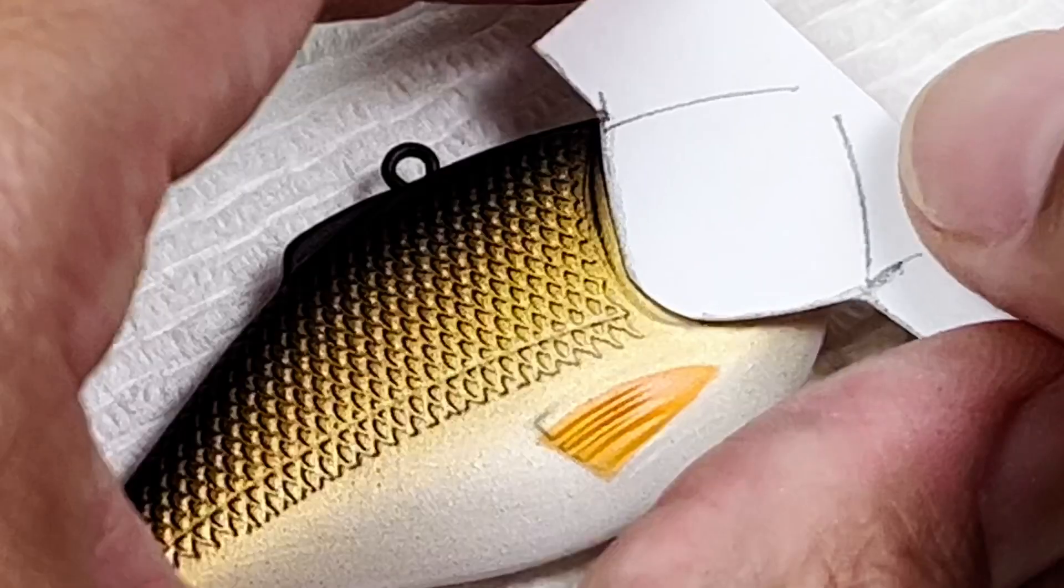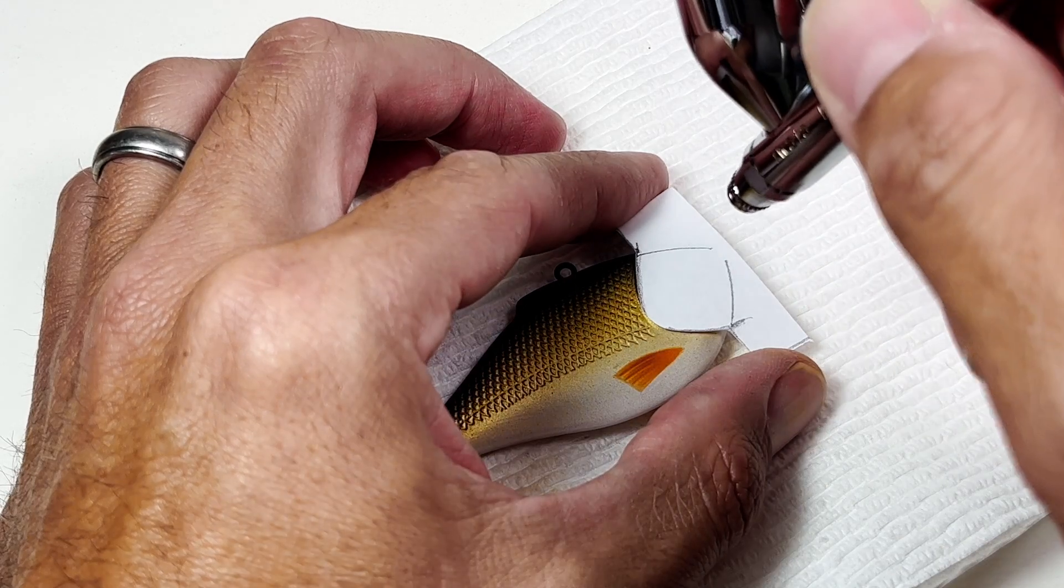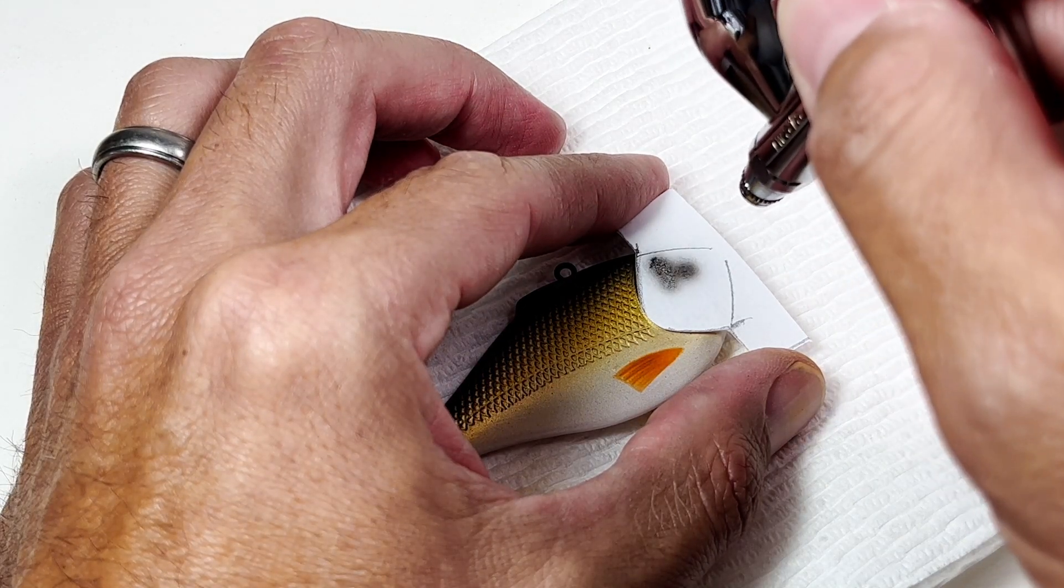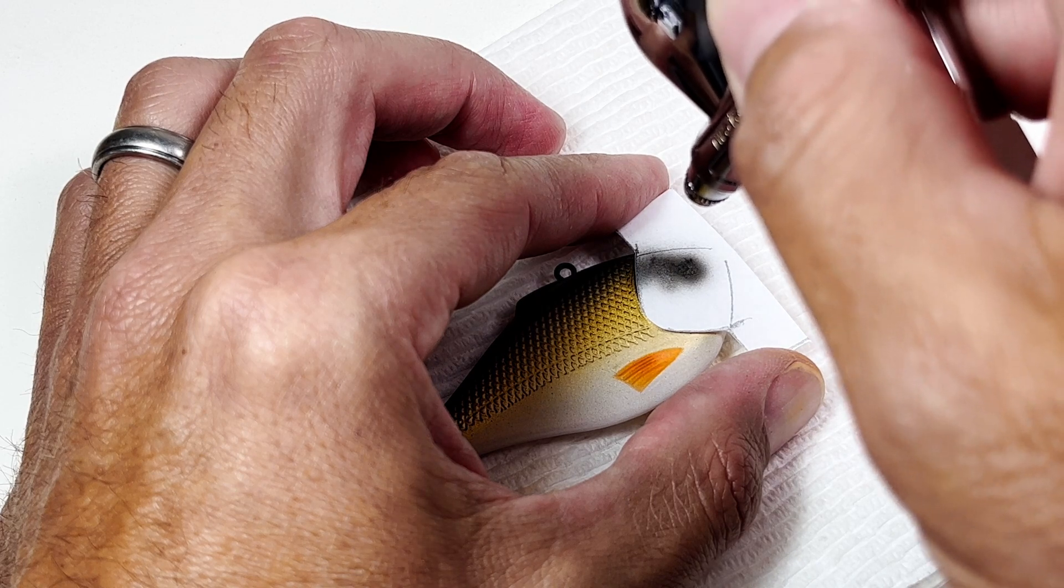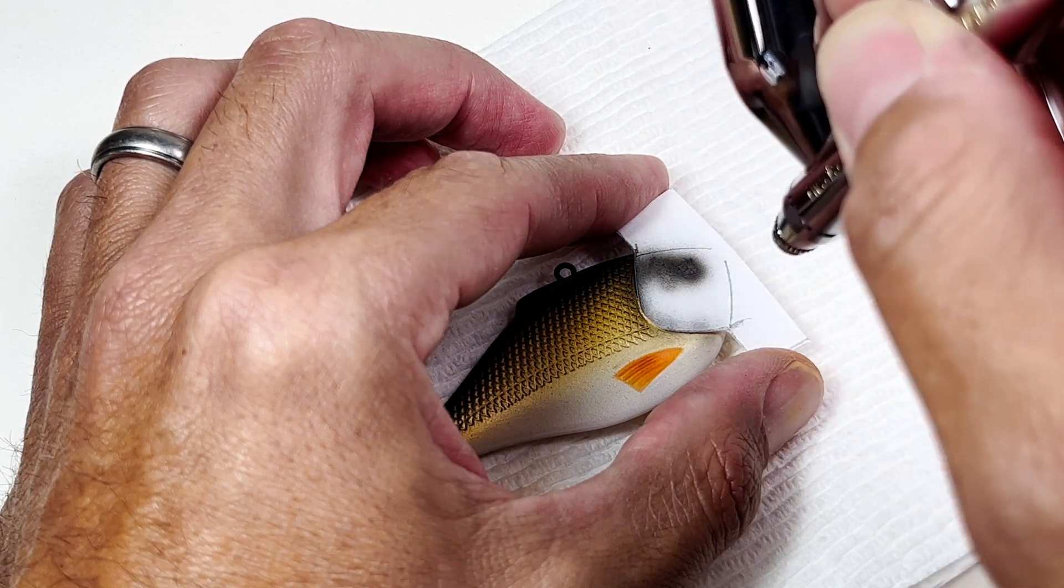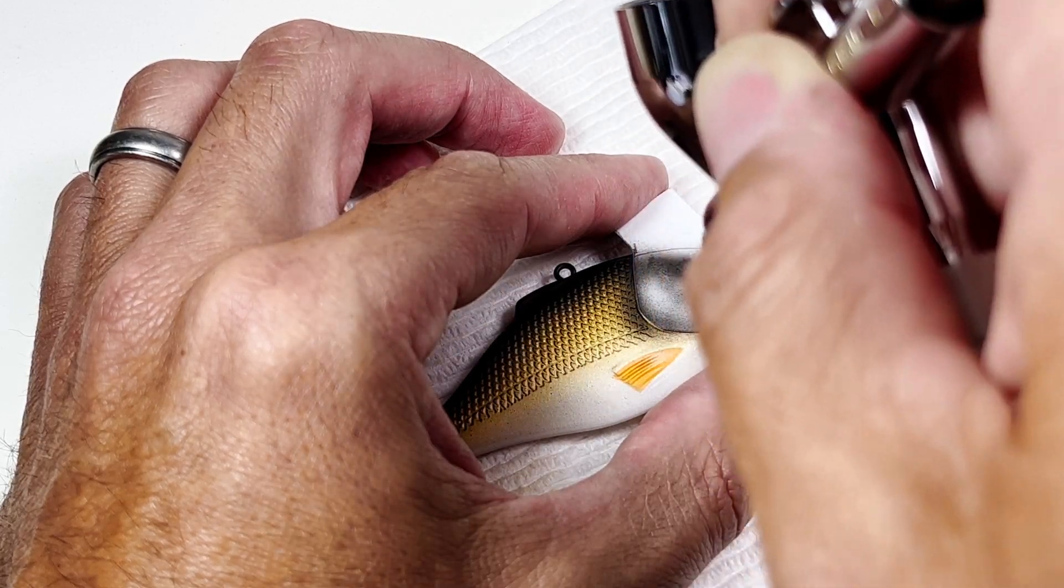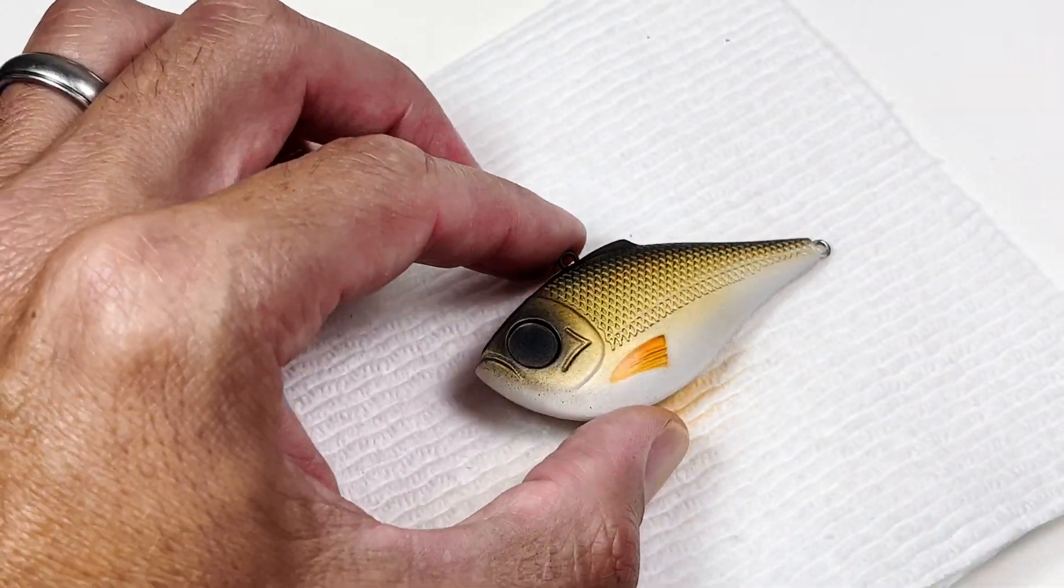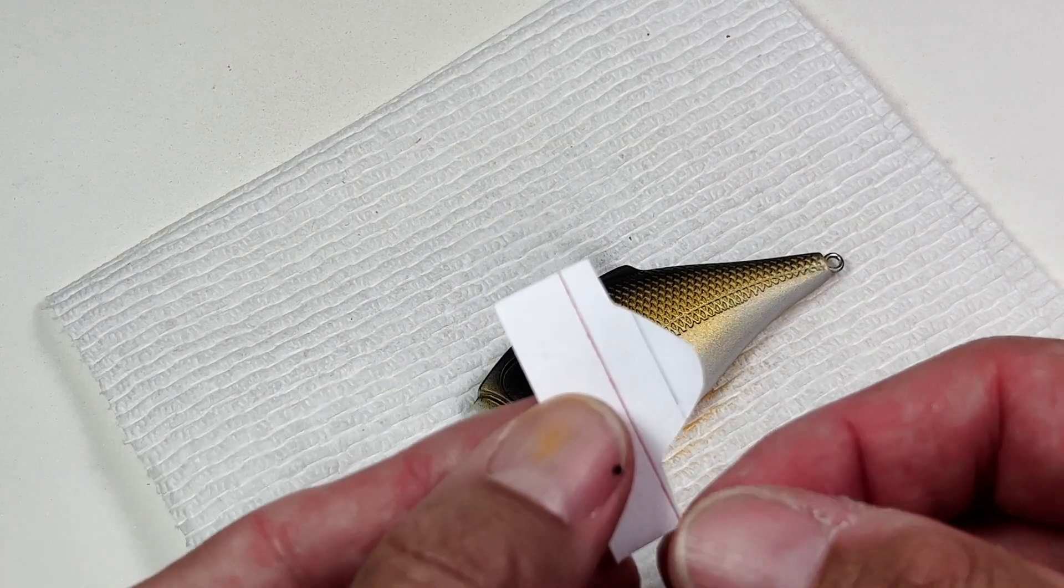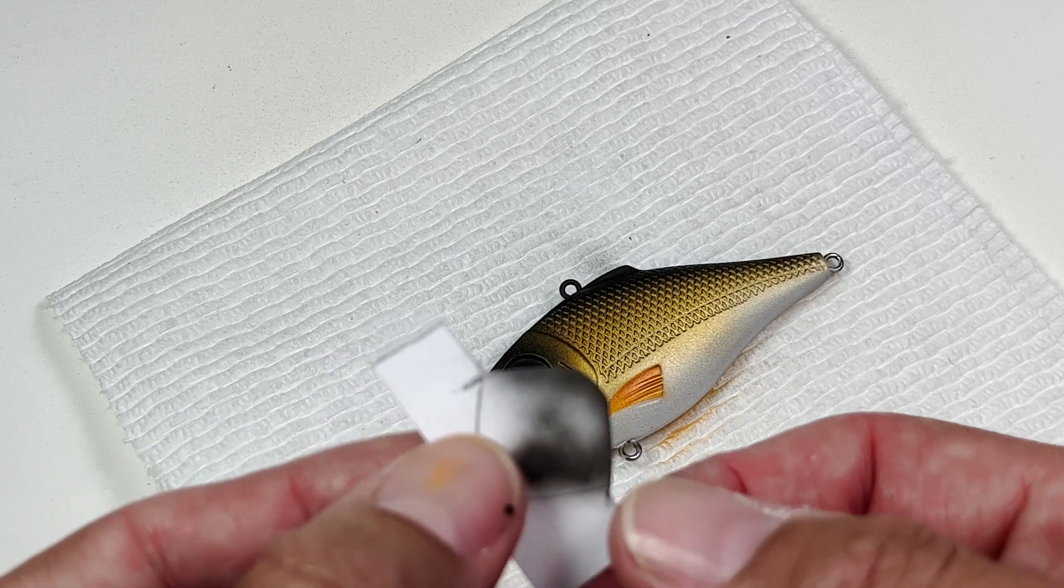I cut another mask out of cardstock so I can outline the gill plate. I test the consistency by test spraying a little bit. I confuse myself a little bit before I spray the other side.